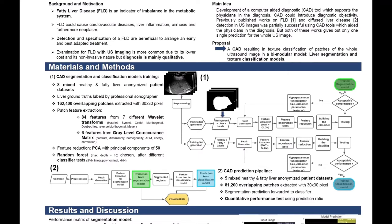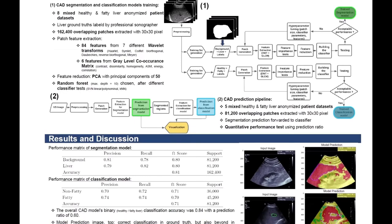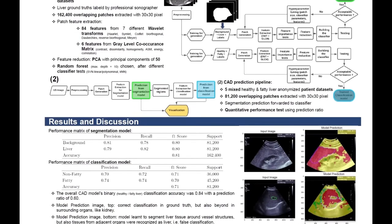For the full prediction pipeline on new datasets, we used five mixed healthy and fatty liver patient datasets with 81,200 overlapping patches at the same 30x30 pixel extraction. The previously trained segmentation model was then forwarded to the classifier, meaning only the segmented liver regions were passed through. The same features chosen during training were used, and we generated a prediction for each single patch in the ultrasound image and visualized them.